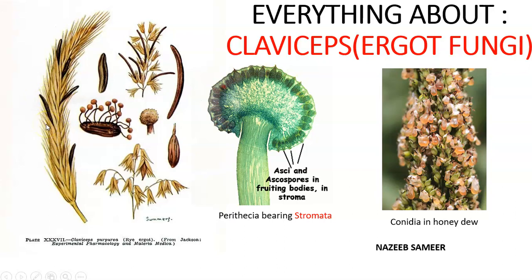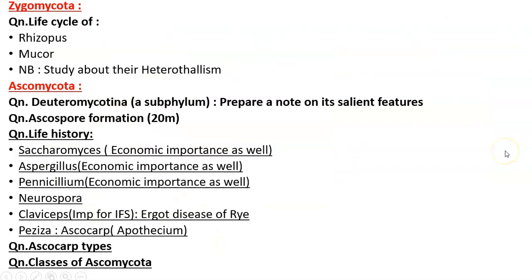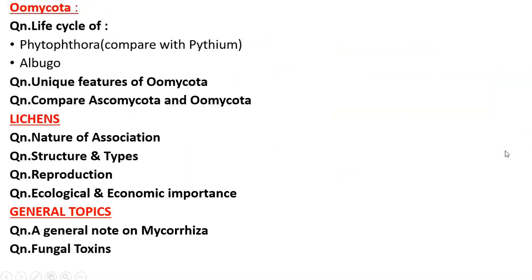Ergot disease is a disease caused by fungi belonging to the genus Claviceps. We are going to see how this happens — these are the sexual reproductive structures and this is the mode in which they reproduce sexually. We will be seeing everything in detail.